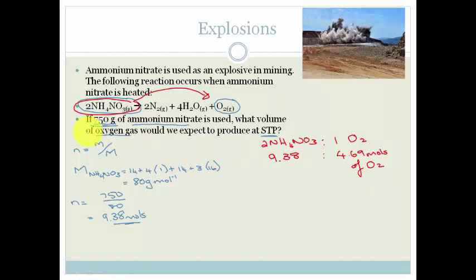So for every 750 grams, that equals 9.38 moles of ammonia. But the ratio is 2 to 1. So for 9.38 moles of ammonium nitrate, we're getting 4.69 moles of oxygen. But what is the question? The question was, what volume of oxygen gas would we expect to produce at STP? But at STP, 1 mole of gas occupies 22.4 decimeters cubed. Remember, we learned about that in our ideal and real gas section.